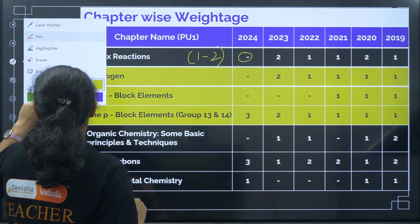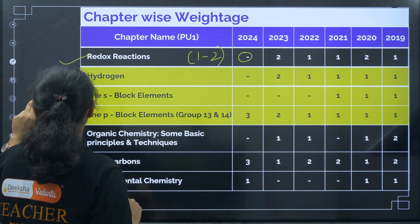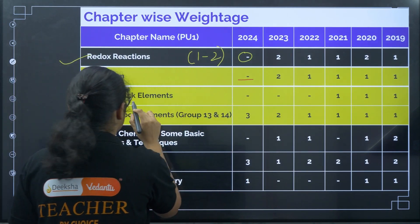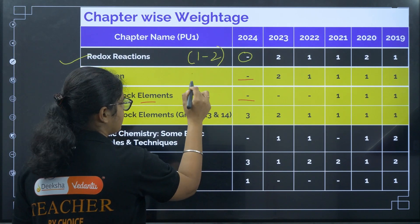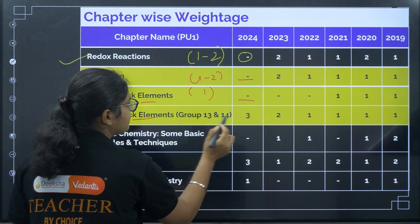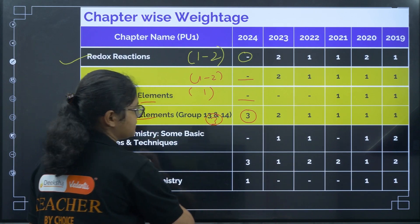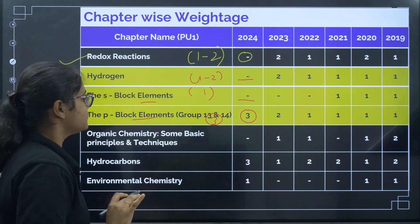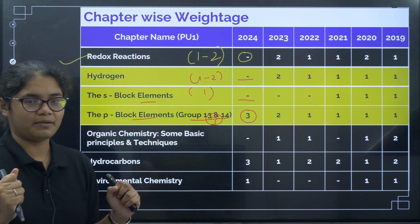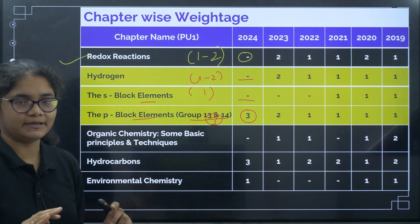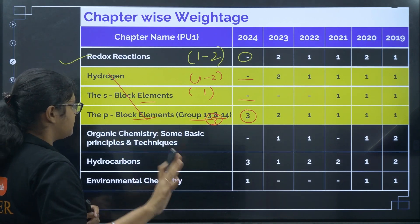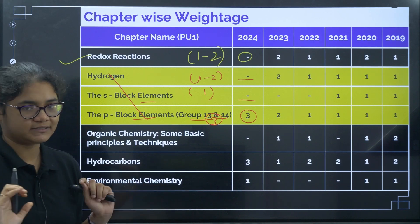For Hydrogen, there was no question last year. S Block Elements also had no question last year, with an average of about one question. P Block Elements had three questions last year — a very difficult chapter with so many things to remember. But the good news is that these chapters are deleted. So S Block, P Block, and Hydrogen — you need not study them.